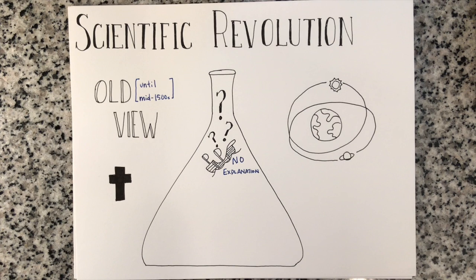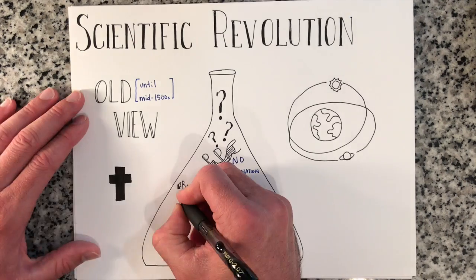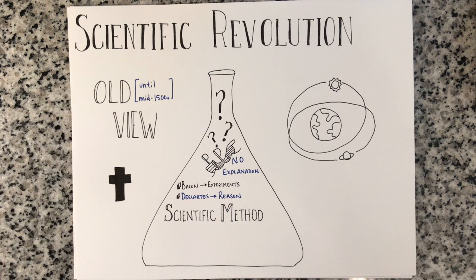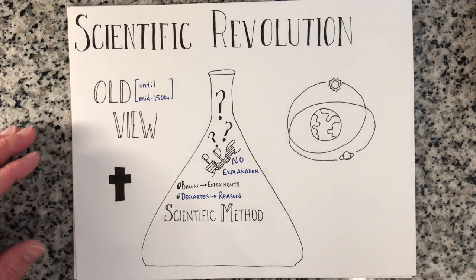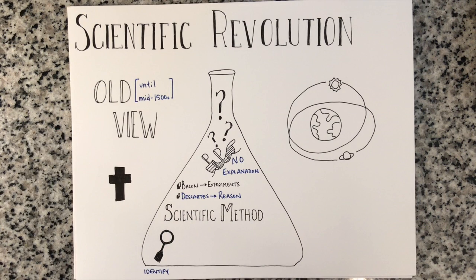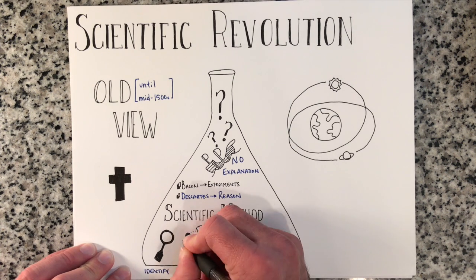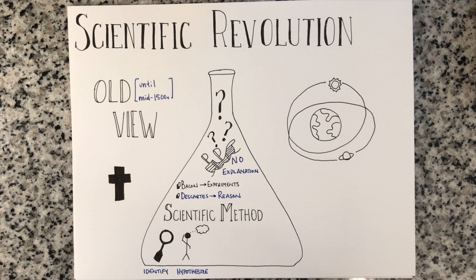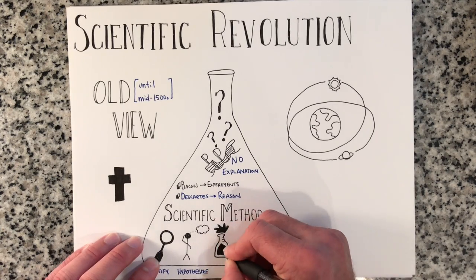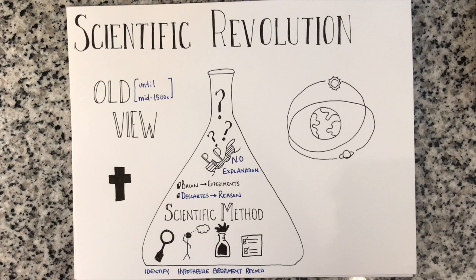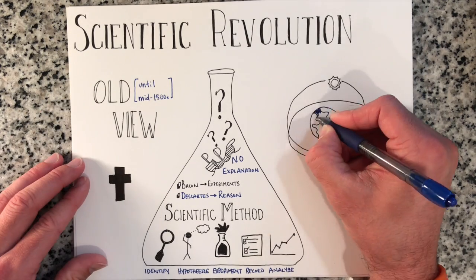One of the established processes that came from the scientific revolution is the scientific method, first developed by Francis Bacon and Rene Descartes. Francis Bacon, in the early 1600s, believed that the only true way to gain scientific knowledge was through experimentation. Descartes believed that everything needed to be questioned until proven true with reason and logic. The scientific method has five steps: first, identify a problem or research question to be answered; second, form a hypothesis that can be tested — a proposed answer based on previous knowledge; third, perform experiments to test the hypothesis; fourth, record the results; and finally, analyze the results to form a conclusion that either proves or disproves the hypothesis.